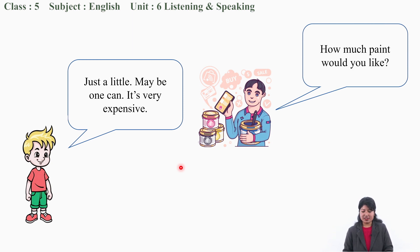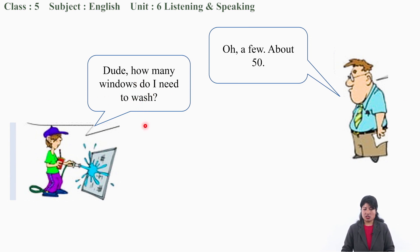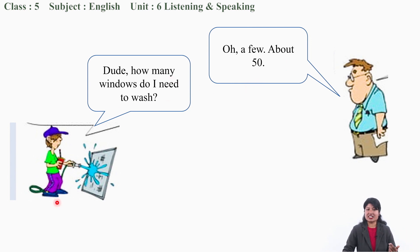One more example I have here. Ask and answer about quantities again. You can practice this in pairs. One example: 'Dude, how many windows do I need to wash?' This boy is asking the man. The man answered: 'Oh, a few. About 50.' He asked how many windows he needs to wash and he replied about 50 windows. Oh my God!